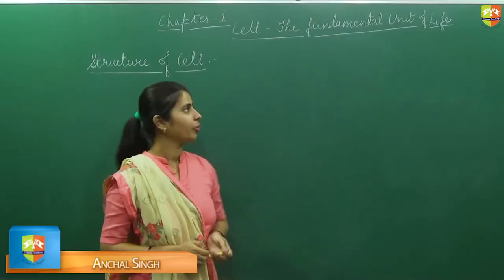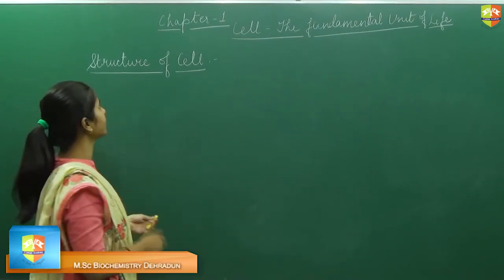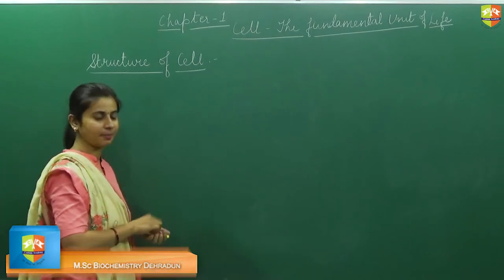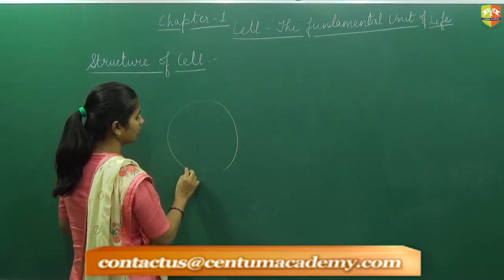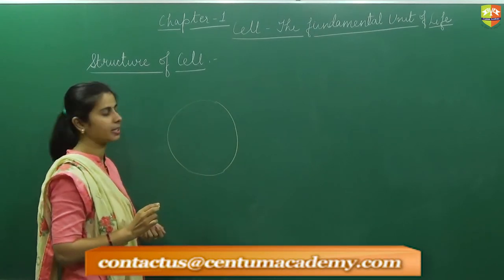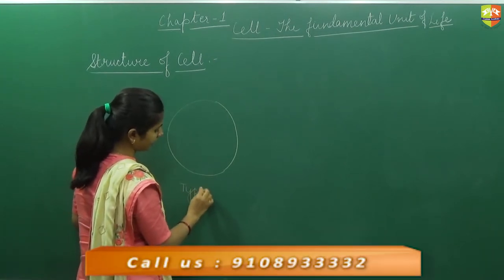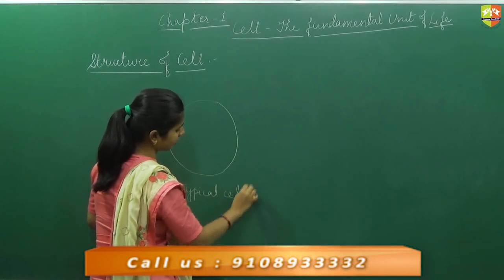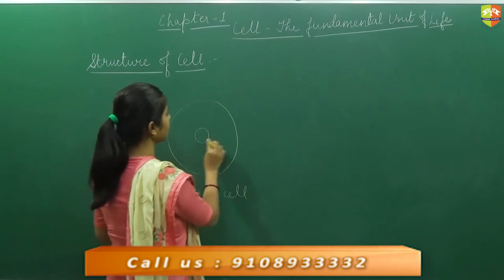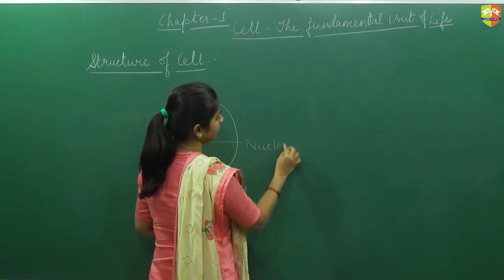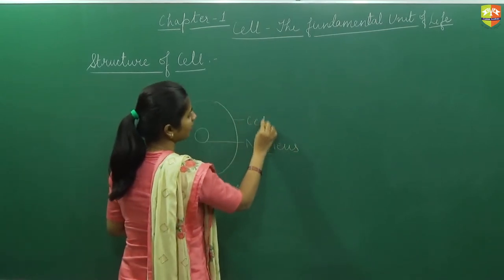Good afternoon class. We will proceed with the chapter 'Cell: The Fundamental Unit of Life' and the next topic is the structure of a cell. The general structure of a cell is circular in nature, but different cells have different shapes, sizes, and volumes. We will study the structure of a typical cell. There is one circular part inside the cell that is known as the master of the cell, called the nucleus. The outer part is known as the cell membrane.